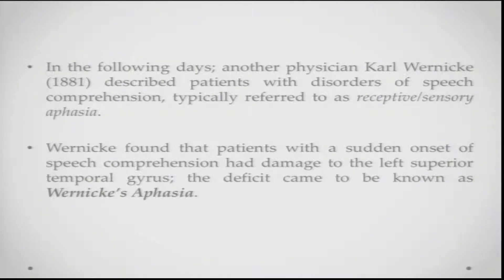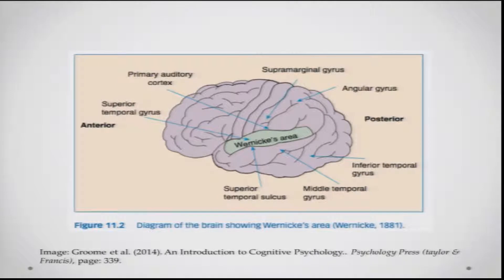Another physician, Carl Wernicke, in 1881 started describing patients who came with disorders of speech comprehension. These patients were referred to as having receptive or sensory aphasia. Wernicke found that these patients — who presented with sudden onset of speech comprehension difficulties — had damage to the left superior temporal gyrus, and this deficit came to be known as Wernicke's aphasia. This area, the left superior temporal gyrus, came to be broadly known as Wernicke's area, connected to comprehension of language.